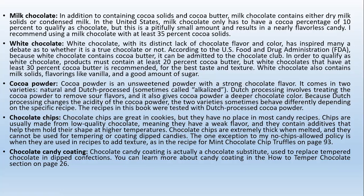Cocoa powder is an unsweetened powder with a strong chocolate flavor, available in natural and Dutch-processed varieties. Dutch processing involves treating the cocoa powder to remove sour flavors and gives it a deeper chocolate color. Because Dutch processing changes the acidity of the cocoa powder, the two varieties sometimes behave differently depending on the specific recipe. Chocolate chips are great in cookies but are not usually used in candy making, while chocolate candy coating is a chocolate substitute used to replace tempered chocolate in dipped confections.